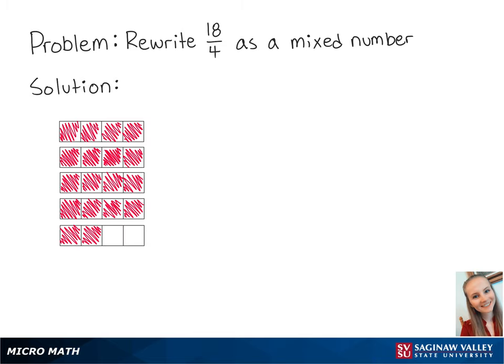As we can see in this picture, with 18 parts, there are 4 groups of 4 with 2 parts left over. Or in other words, this is equal to 4 wholes and 2 fourths. This means that 18 fourths is equal to 4 and 2 fourths.